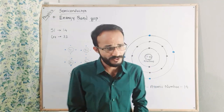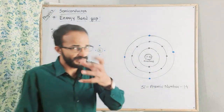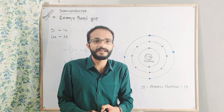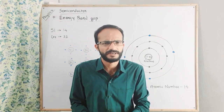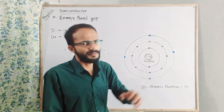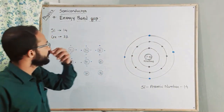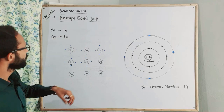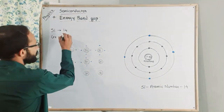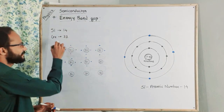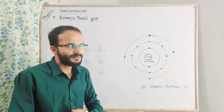Now we are going to discuss about the energy band gap. But before we study the energy band gap, I am going to discuss a few things. That is the semiconductor material. We have two examples of semiconductor — one is silicon and one is germanium. The atomic number of silicon is 14, and germanium is 32.